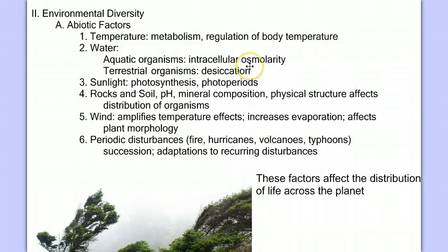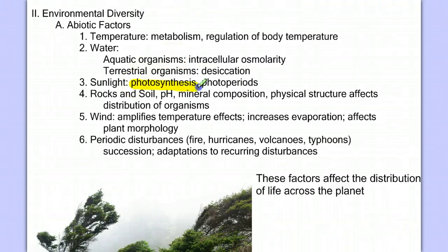For organisms in salt water, they must protect against the loss of water. For freshwater organisms, they have the problem of absorbing too much water. For terrestrial or land organisms, there's always the fight against desiccation or water loss to the relatively dry air surrounding them. Sunlight is another abiotic factor. The basis of energy flow through an ecosystem relies on the conversion of solar energy into organic material via photosynthesis. We also see photoperiods, which are cues based on the length of the day that affect processes such as flowering and seasonal changes in plants such as dropping leaves, and also behavioral changes in animals such as the timing and pattern of migrations, the timing of sexual receptivity, hibernation, and other behaviors related to the time of year.